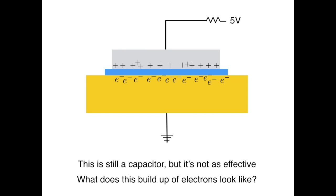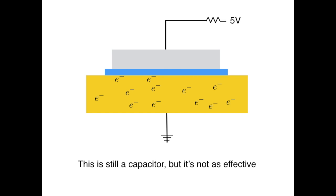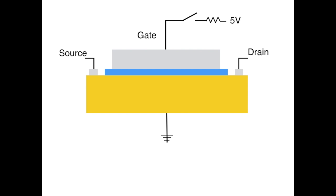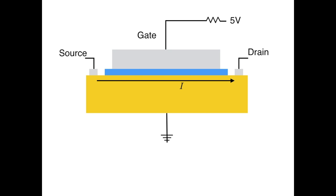What does this buildup of electrons look like? Hopefully you remember — it looks like a wire. So when the switch is open, we don't have a wire present, but when we close the switch and get this buildup, we do. So we now know how to make a wire appear and disappear. I'm going to add two terminals to this device: a conductor on the left called the source, and a conductor on the right called the drain. When voltage is not applied to the gate, there's no wire — there's no way to get current from the source to the drain. However, if we apply voltage to the gate, we get a wire, and now we can get current from the source to the drain. This works a lot like a faucet: if you don't apply a voltage to the gate, it's like turning off the faucet and you don't get any water through the pipe. If you do apply a voltage to the gate, it's like opening up the faucet and you get current going through the pipe.